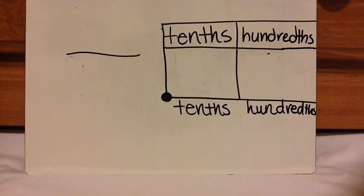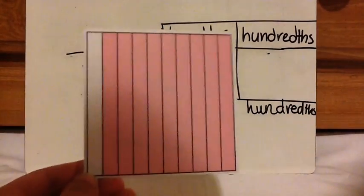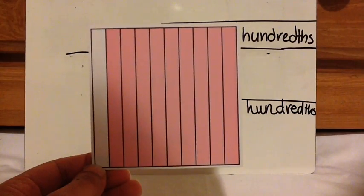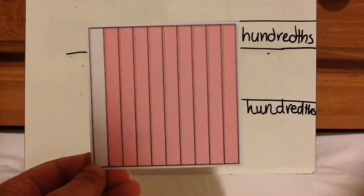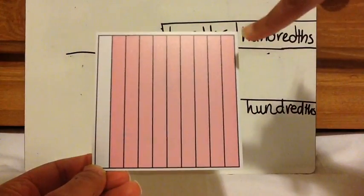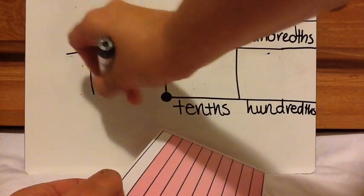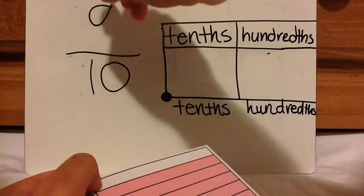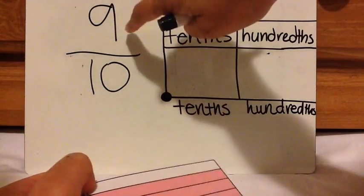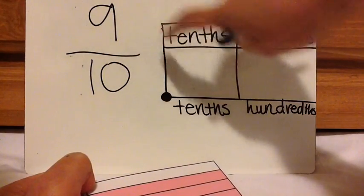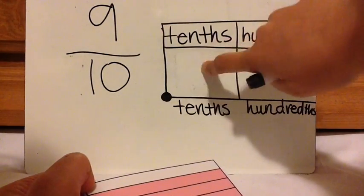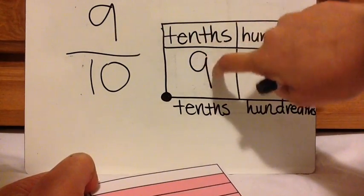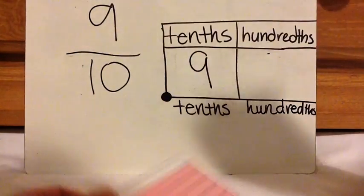Here is another one. Press pause and then press play when you're ready to check. There are ten pieces here and there are nine shaded in. So when I read this, it's nine tenths. So I need to make sure I finish in the tenths place. Nine tenths.